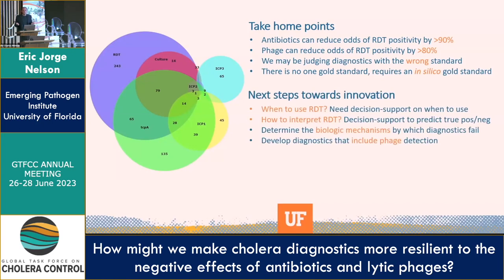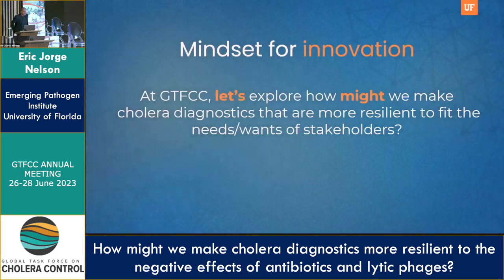In terms of innovation, there are exciting things we can do. One is building decision support for when an RDT should be used — looking at the overall context, clinical picture, and epidemiologic picture — and if an RDT is indicated, predicting whether a result is a true positive versus a true negative. There's more biology to be done on why these diagnostics have challenges. I strongly encourage teams doing this work to include primers for these phages in your molecular assays. We're working on a diagnostic using the same RDT you use, adding a test line for the ICP-1 phage. At the GTFCC, I challenge you to explore how we might make cholera diagnostics more resilient to fit the needs of stakeholders, your community, and most importantly, your patients.